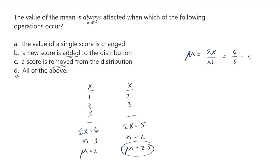But what if I didn't remove the 1? What if I remove the 2 instead? So if I had 1 and 3, my new sum is going to be 4, and n equals 2. My mean will be 4 divided by 2, it's going to be 2. This mean did not change. So I removed a score, and the mean of the new set of numbers didn't change.